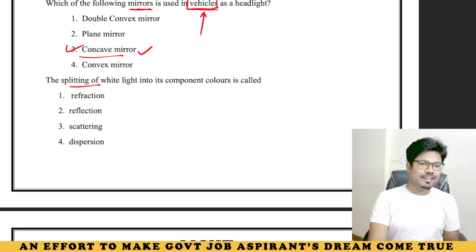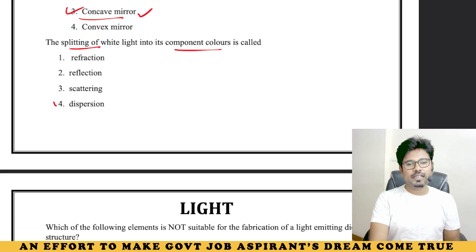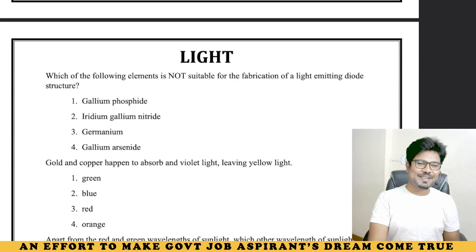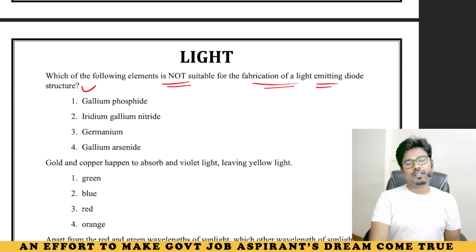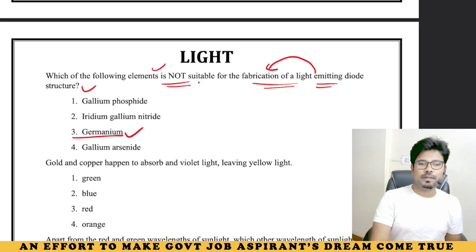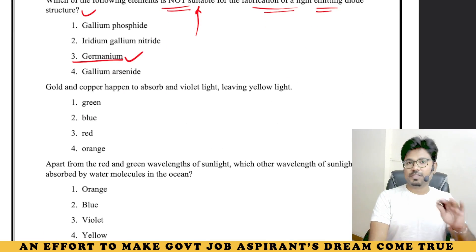Splitting of white light into its component colors — white light splitting into its component colors — that process is called dispersion. This is also from loose-end physics. Which of the following elements is not suitable for the fabrication of a light emitting diode structure? Not all semiconductor materials are suitable for fabrication into a light emitting diode. This is from chemistry.